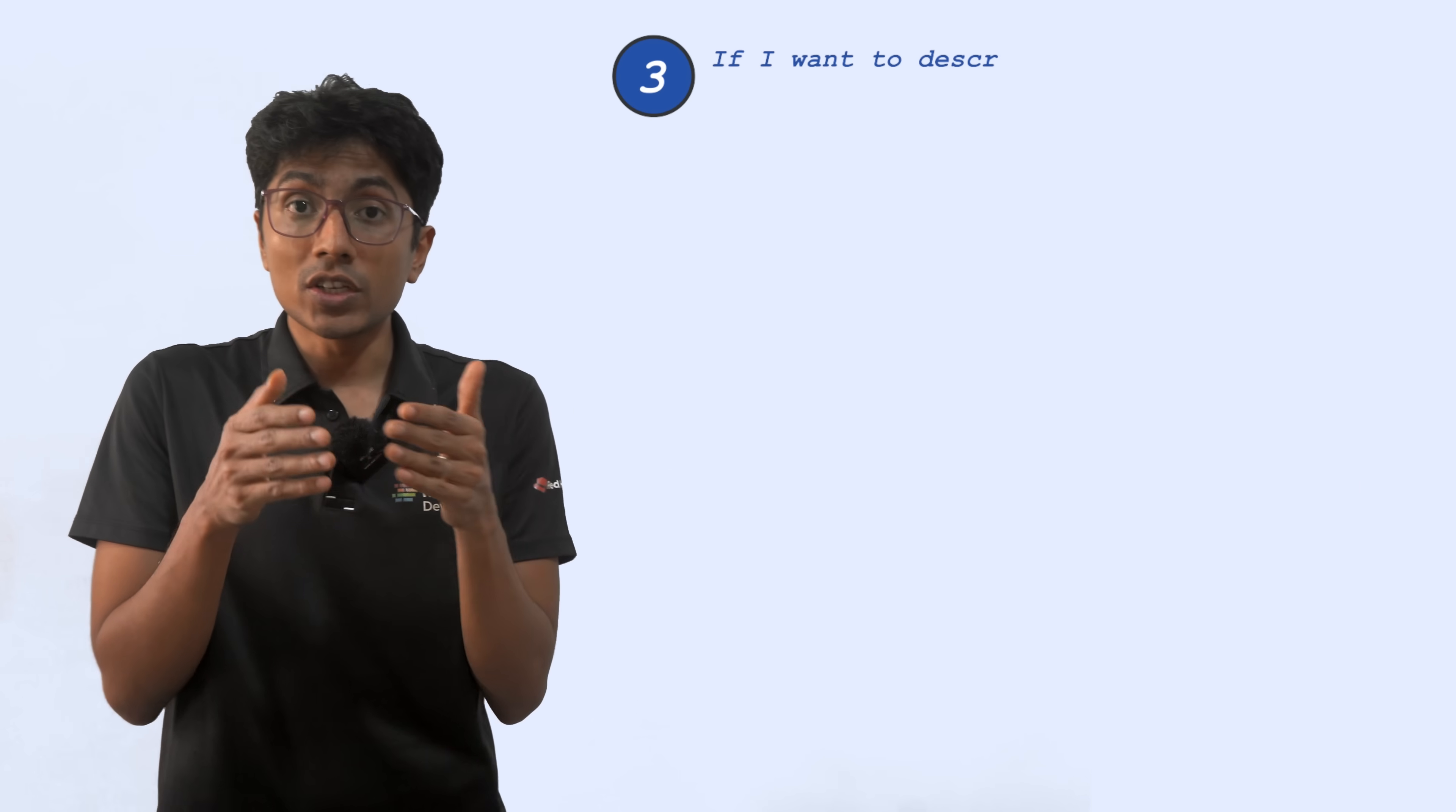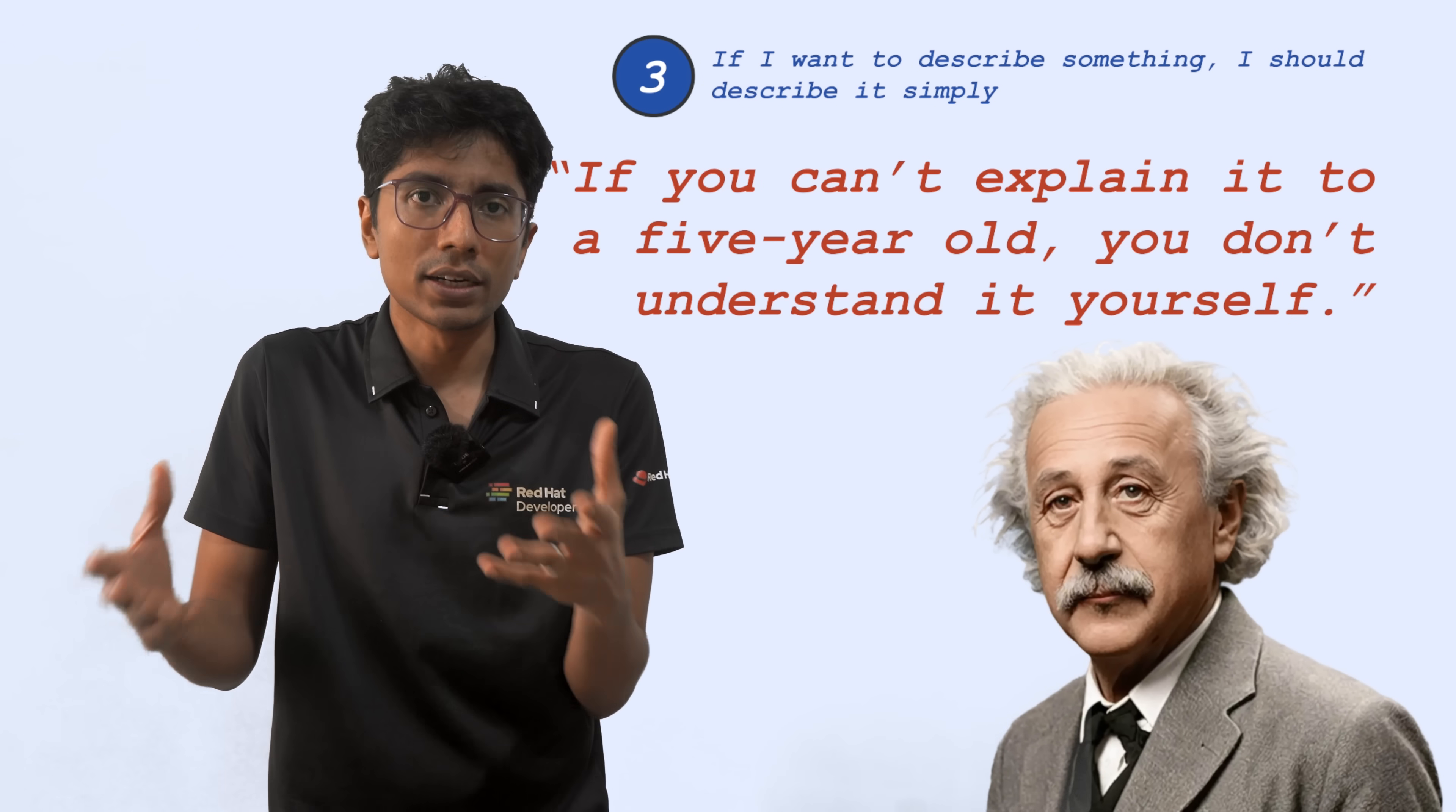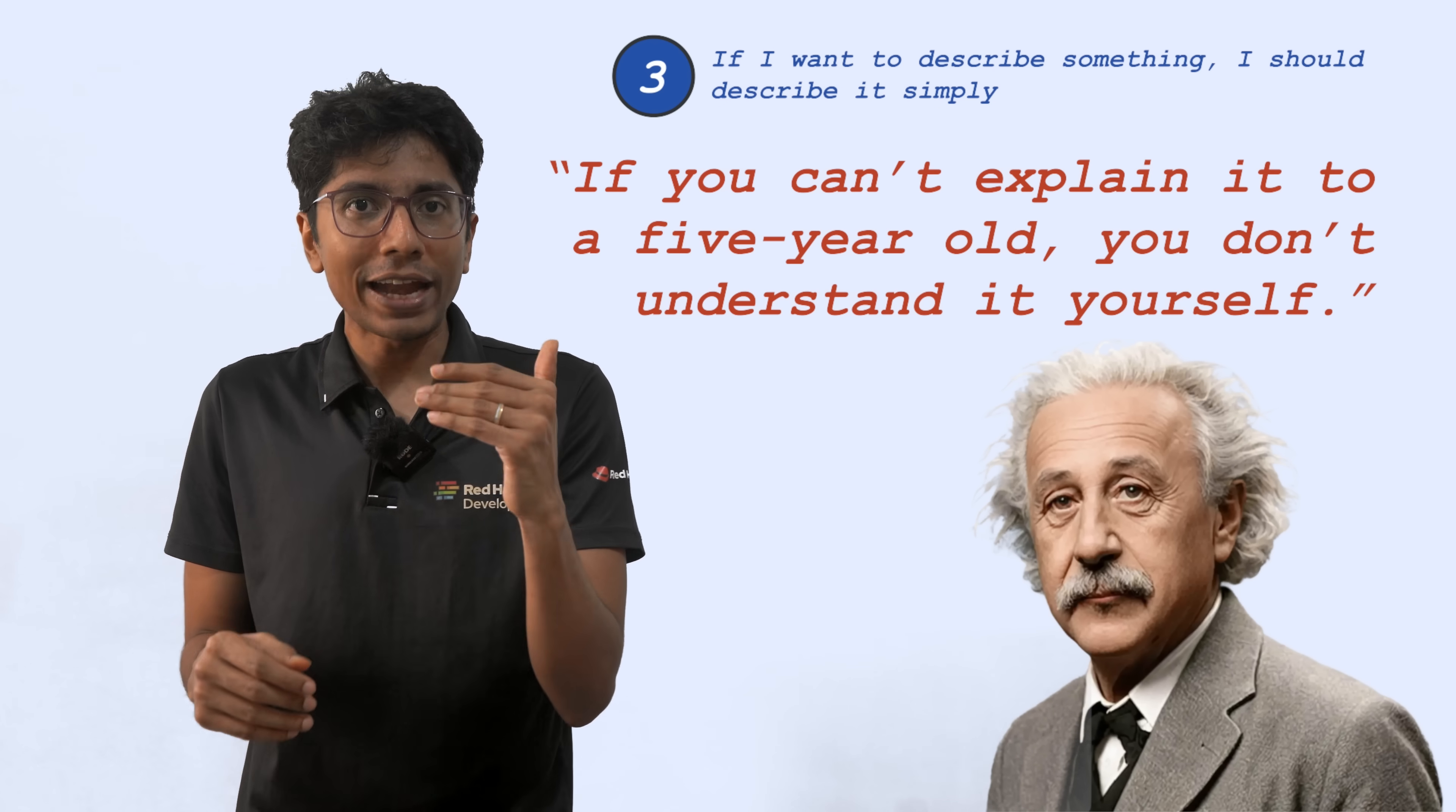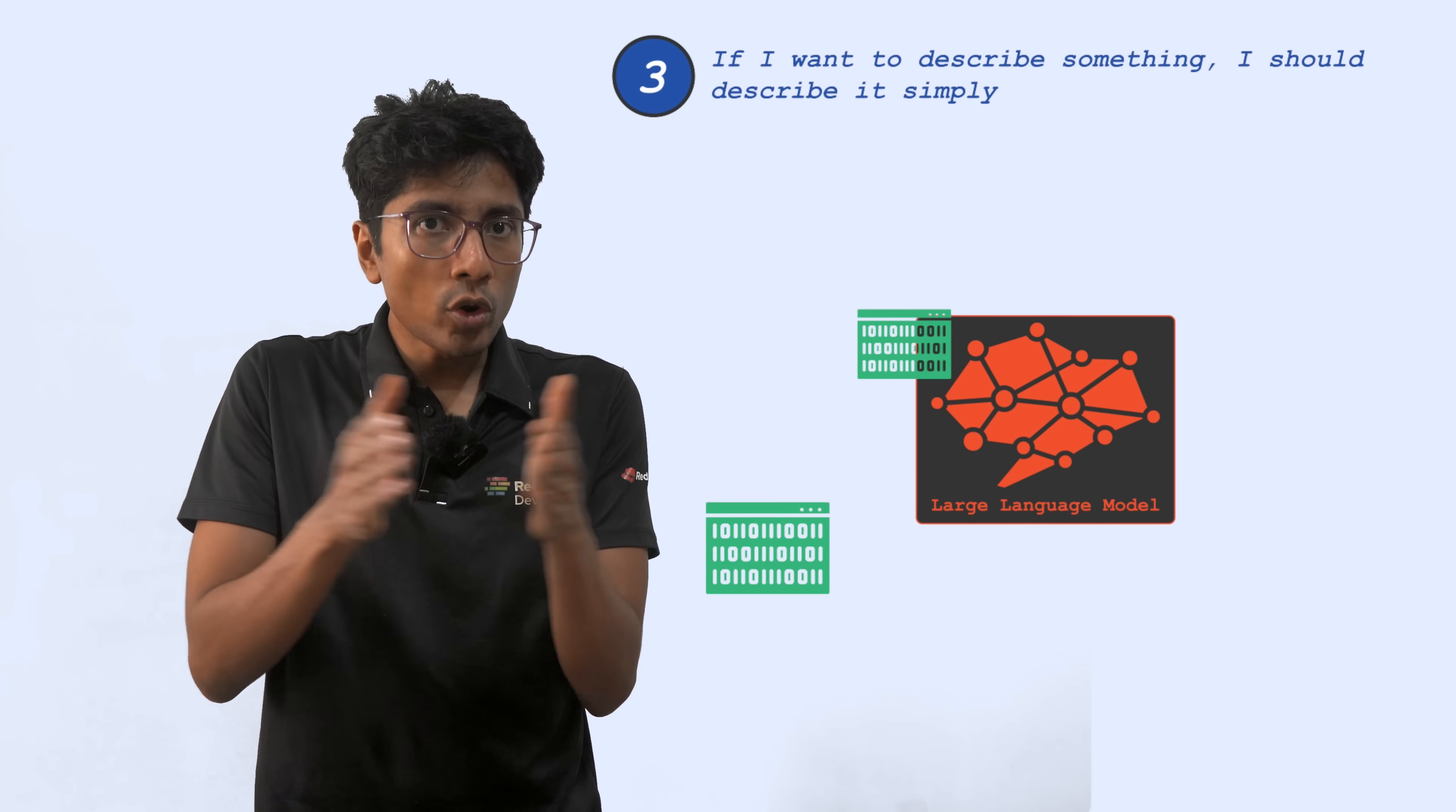The third point is from Richard Feynman, which says that if I want to describe something, then I should describe it simply. Albert Einstein also I think said that if I can't describe it to a ten year old or an eighteen year old, then I don't really understand it. I might have messed up the quotes there. But the basic idea is that if you are trying to understand something, then you have to understand it in a simple way.